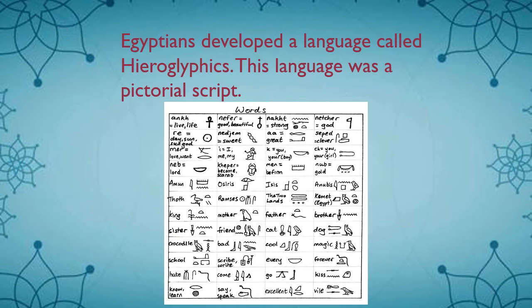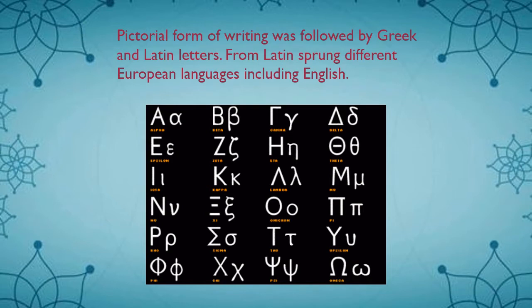Hieroglyphics was a pictorial script. A hieroglyph was a character or letter which belonged to the ancient Egyptian writing system, and these characters are usually written in picture format. For example, a picture of a bird used to represent the sound of the letter A. This pictorial form of writing was also followed by the Greek and Latin letters, and from Latin, different European languages developed, including English.